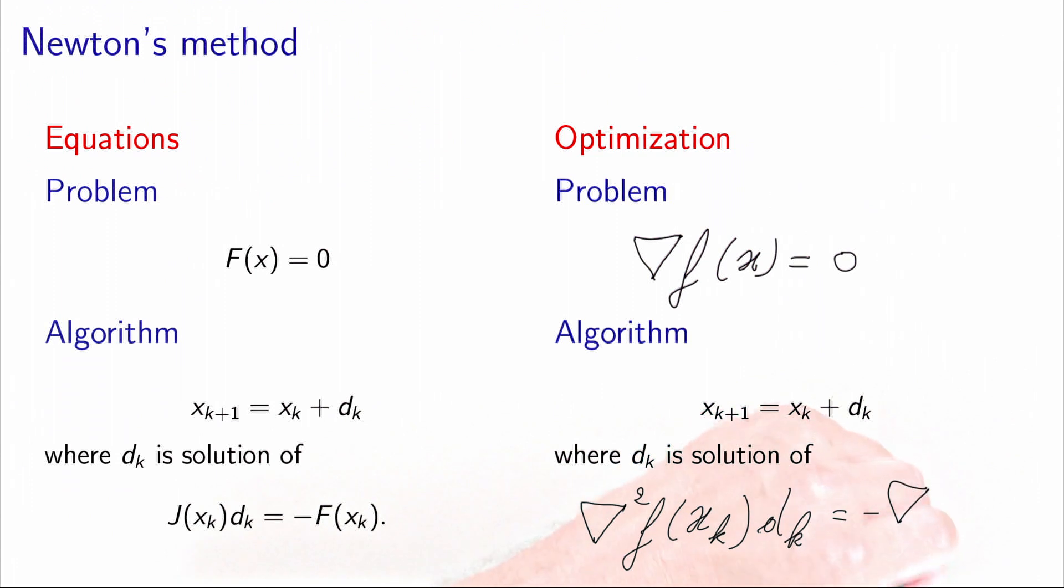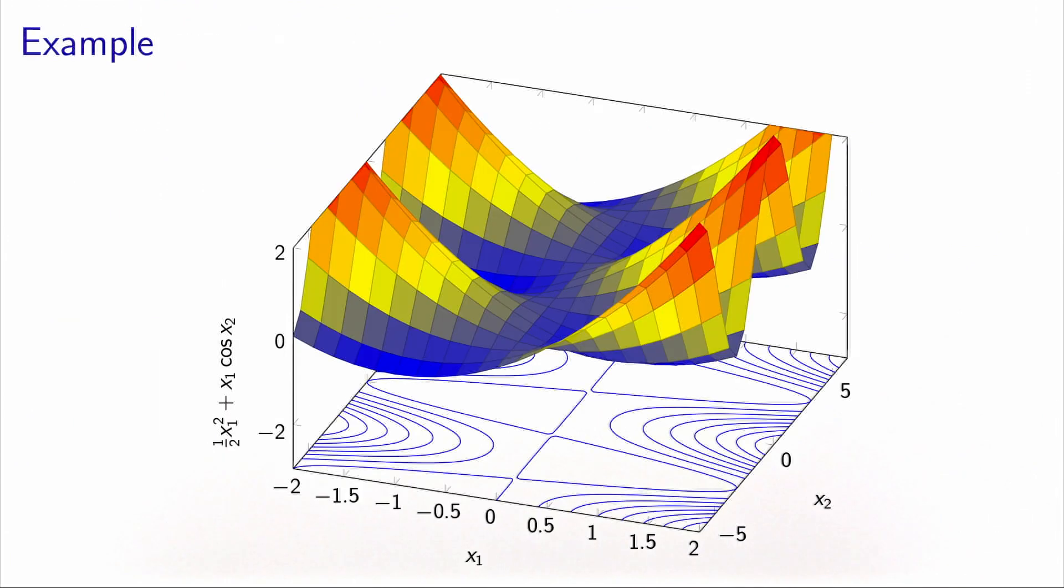So the equation to be solved in order to calculate dk is the Hessian matrix times dk equals minus the gradient of f at xk. So this is the algorithm that should be used to solve an optimization problem using Newton's method. Newton's method to solve systems of equations does not always work. It's not always convergent. But when it converges, it may converge very fast.